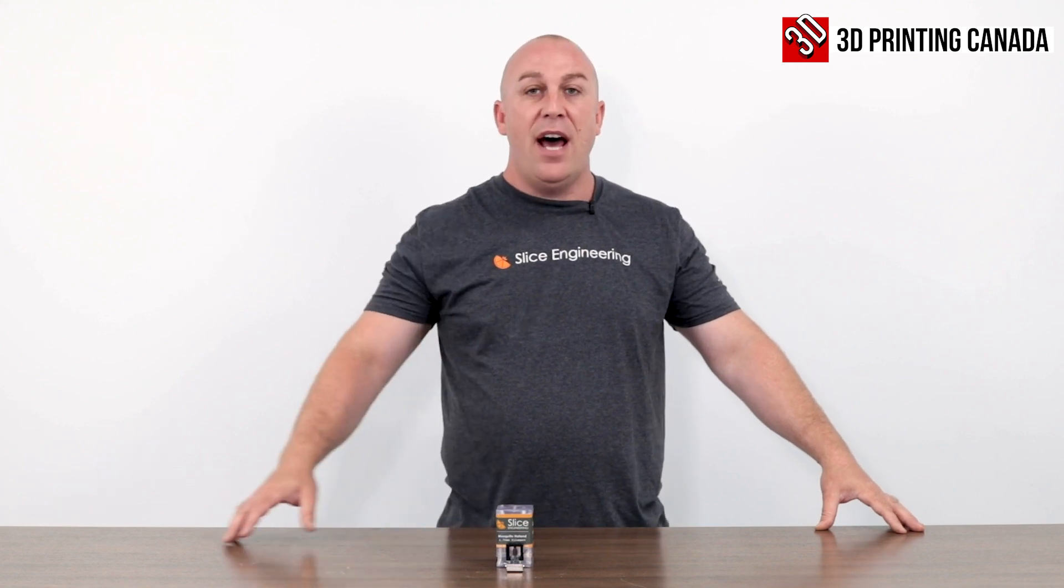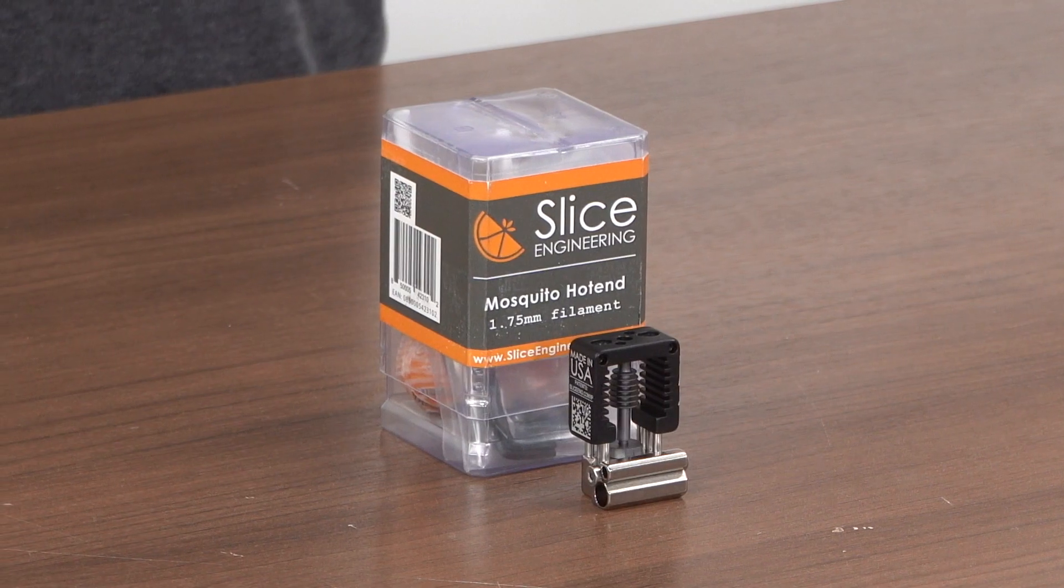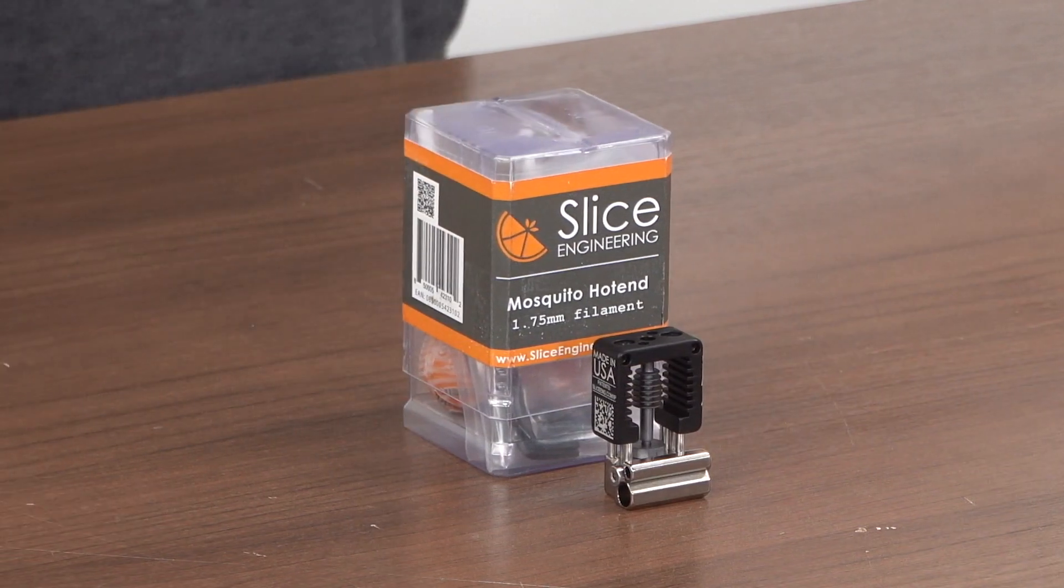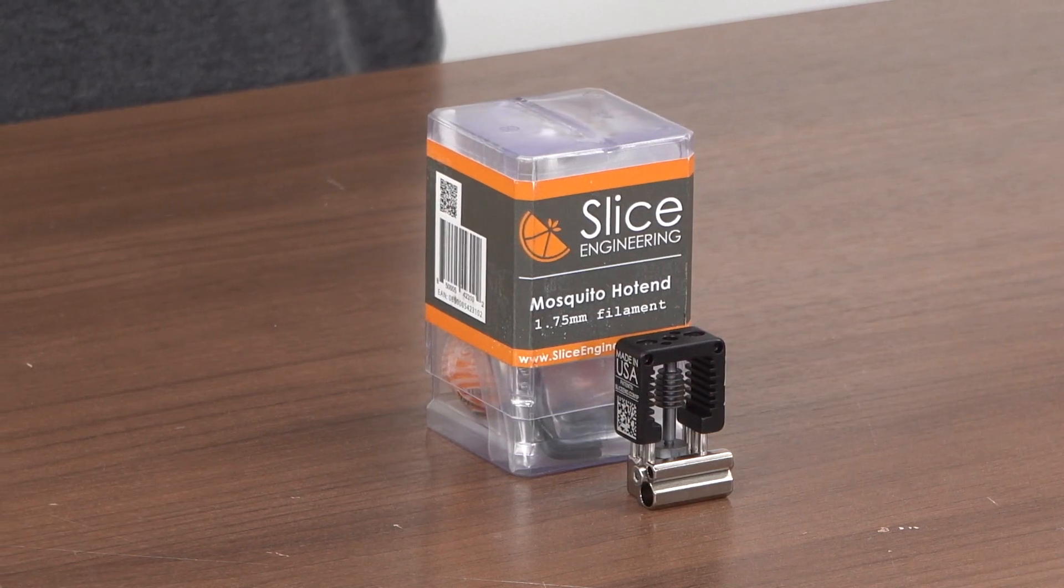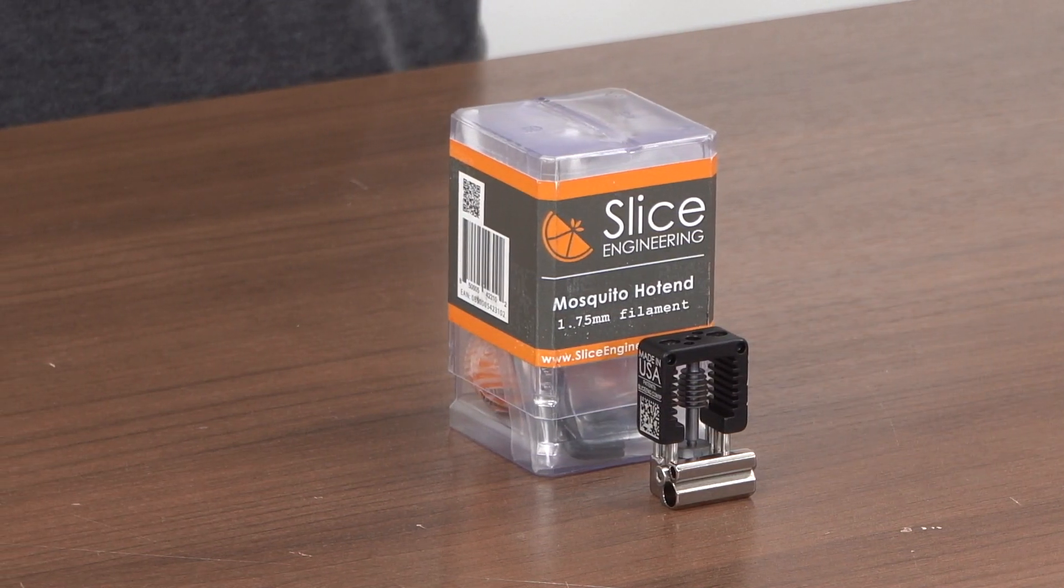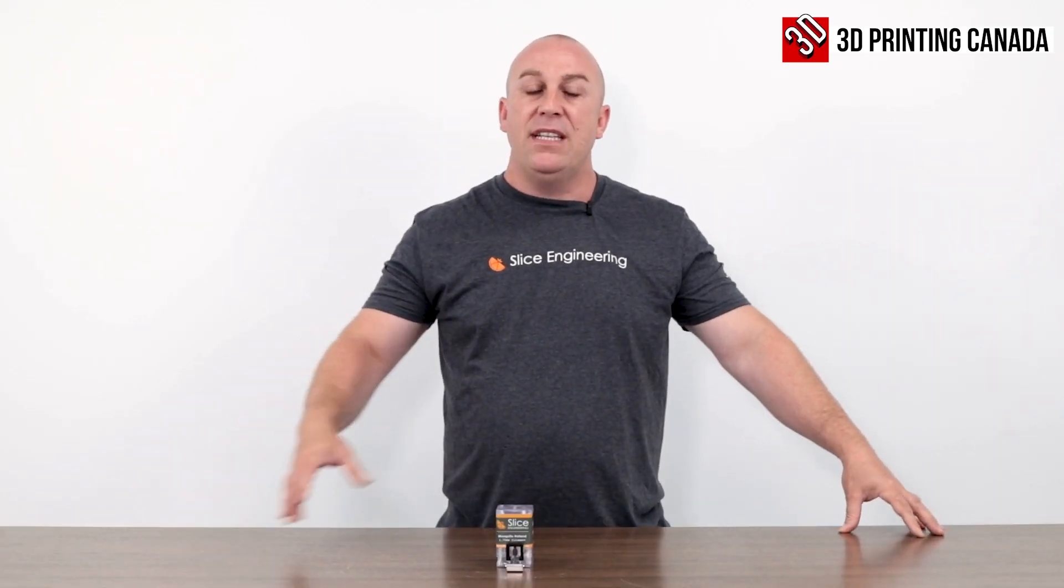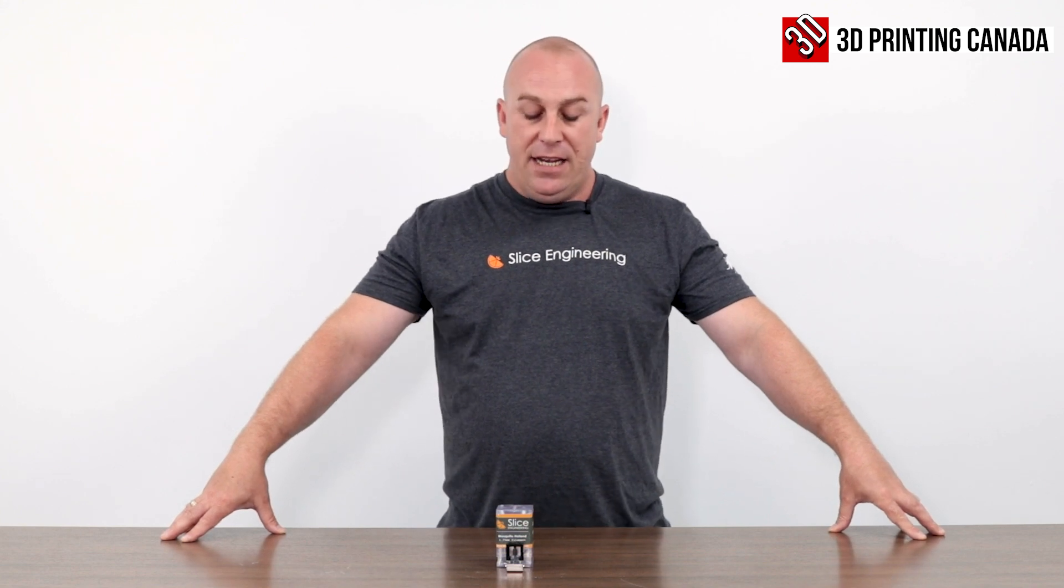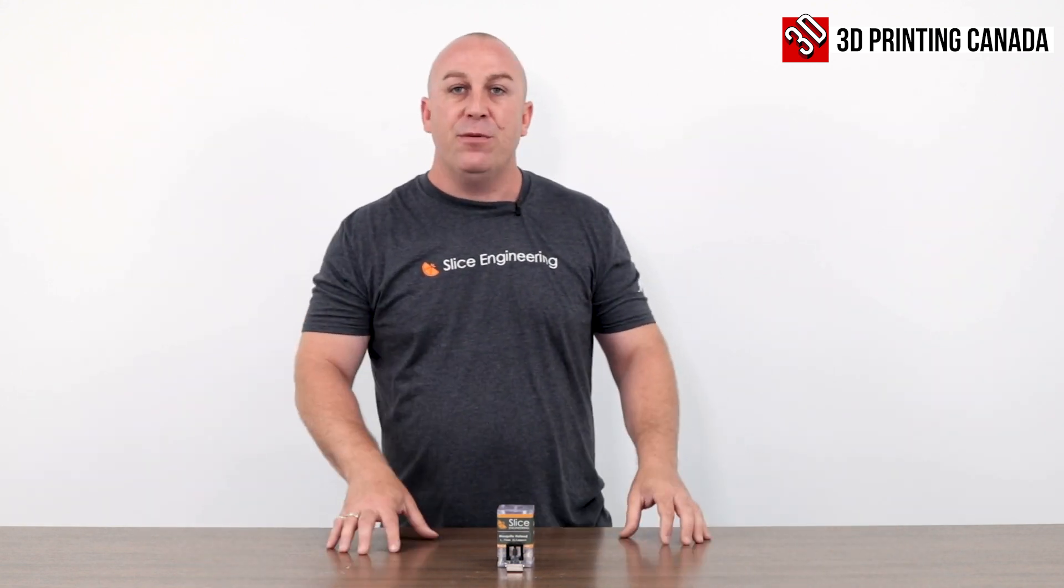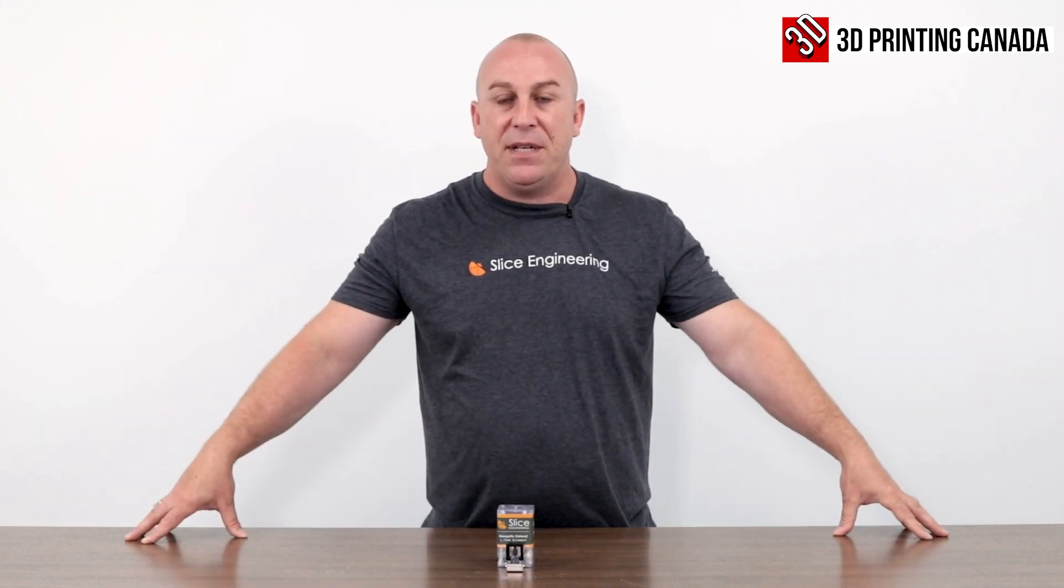It's one of my go-to hot ends. On any printer I use personally, I like to use a Slice Engineering hot end especially for any type of high temperature application: nylon, nylon carbon fiber. The other stuff will go all the way into PEEK with the temperatures you can hit. You would need to upgrade your thermistor and heater cartridges for those applications.